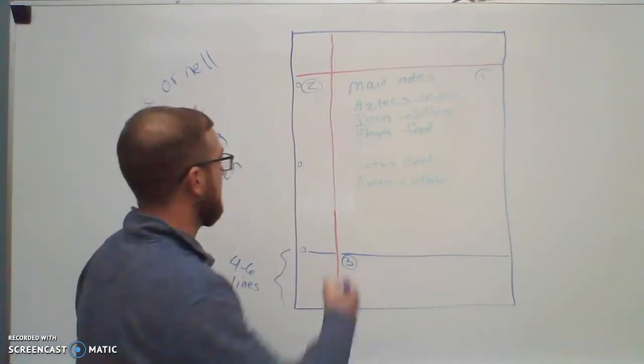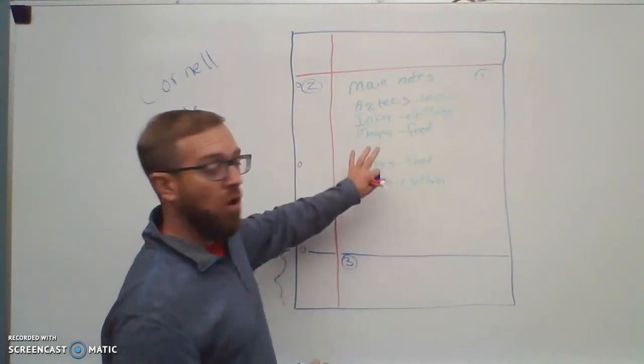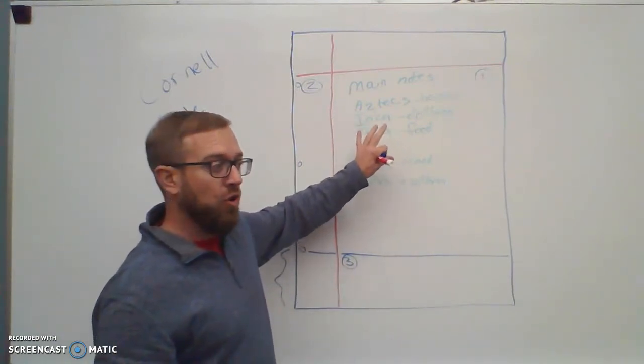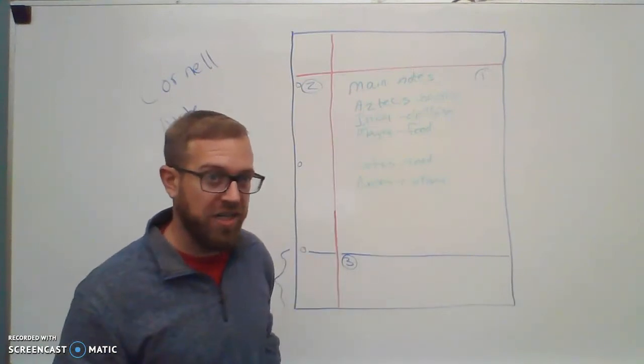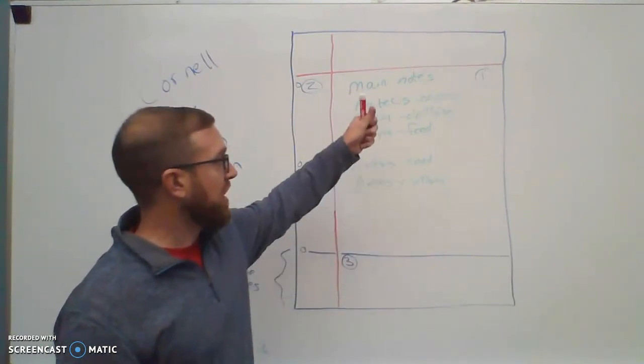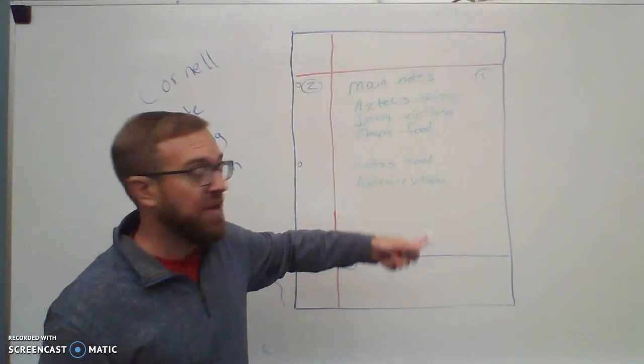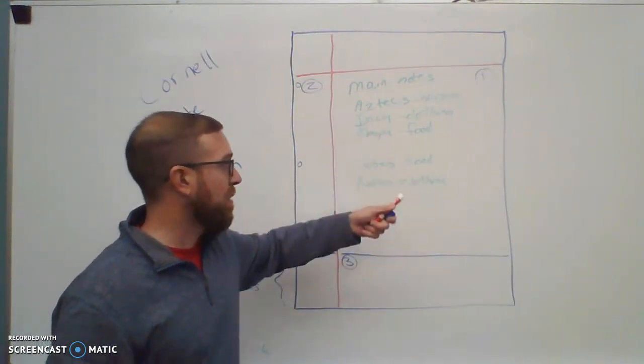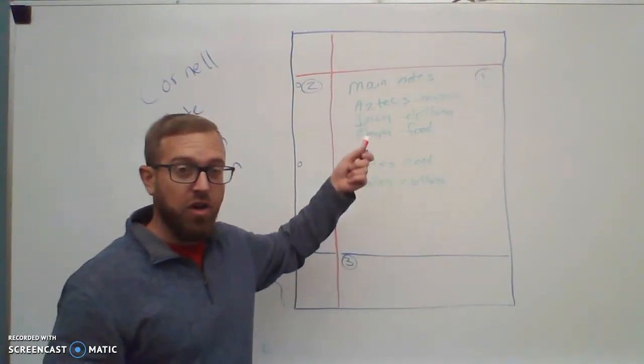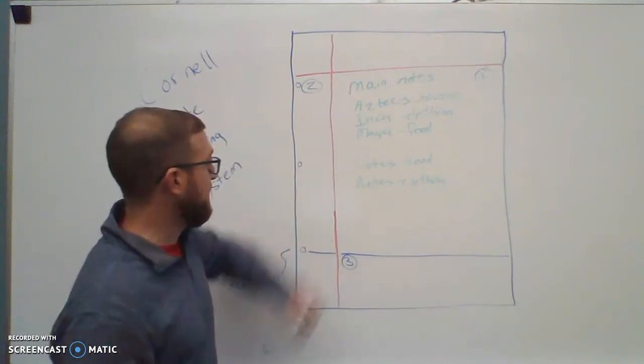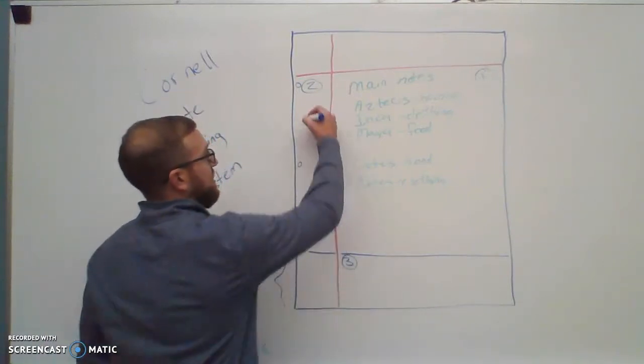In the second box, this is where you're going to write down what the topics are that you're talking about. So in this, we're talking about housing for the Aztecs, the Inca, the Maya. We're talking about the food, the clothing that they wore. So in this column we might write down something like Native American resources.